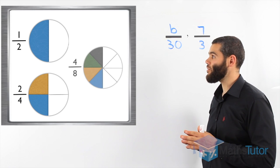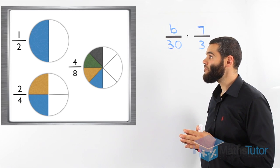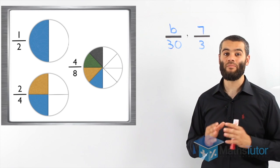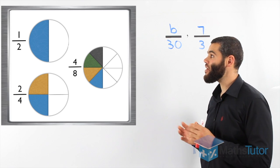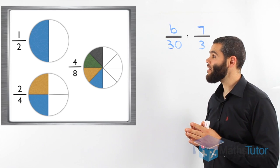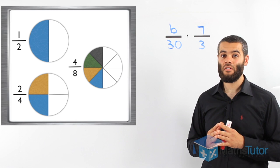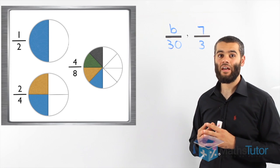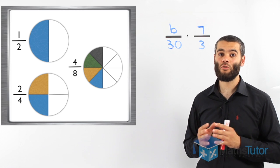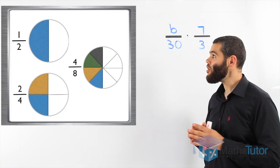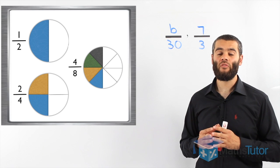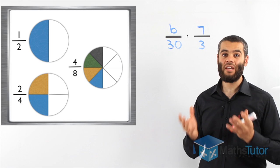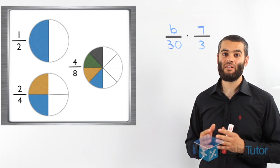Let us look at a third example with a circle diagram. Now this circle has been divided into eight parts, four of which have been shaded. So four out of the eight have been shaded. But if we look closely, it has the same amount shaded as the top two circles as well. So 1 over 2, 2 over 4, and 4 over 8 are all equivalent fractions. They have the same value, but they are written differently.